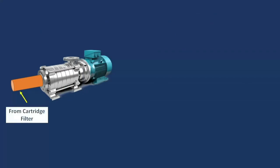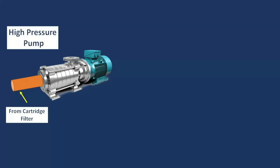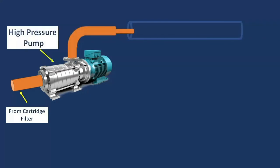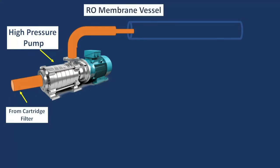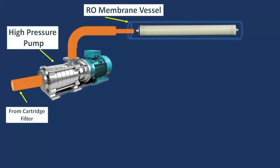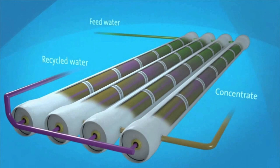The high-pressure pump increases the water pressure. The pressure range depends upon the design of the plant. This high-pressurized water then enters the RO membrane vessel. One or more membranes are installed in a vessel. The RO membrane is a permeable membrane which has one inlet and two outlet connections.